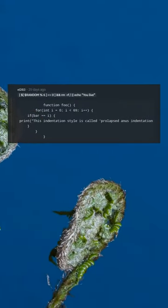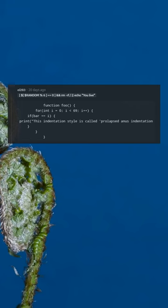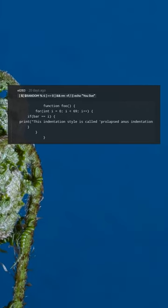Function foo for ni 0i 69i if bar i print this indentation style is called prolapsed anus indentation.